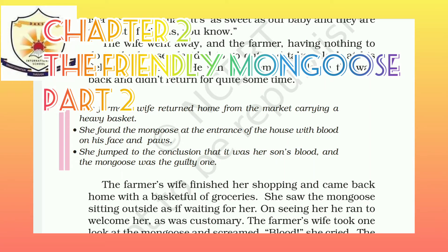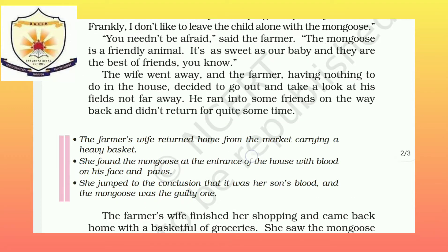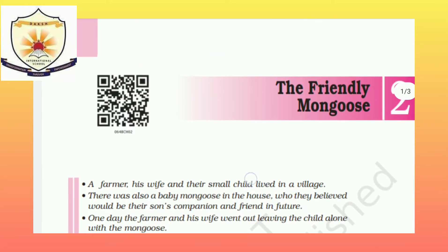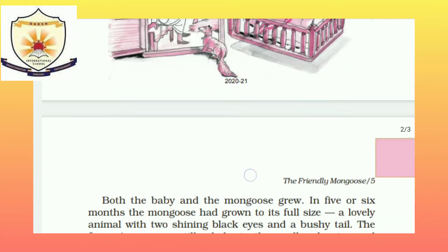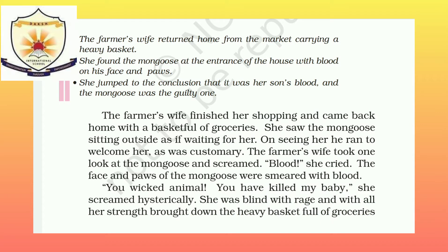Hello children, welcome to Dutch Online Classes. Today we are going to start Chapter 2 of the English Literature supplementary book, Grade 6 CBSE. We had already covered the first part of 'The Friendly Mongoose.' Now we move on to the second part. So let's begin with the text.